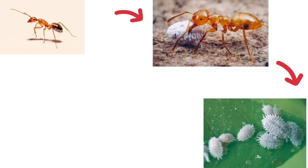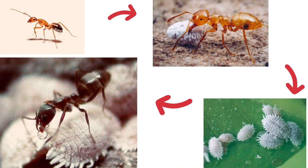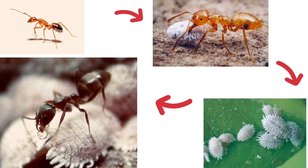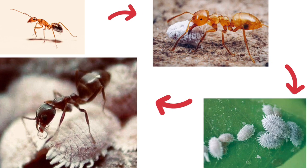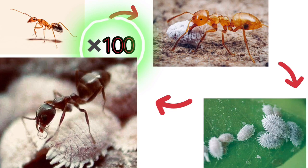You might wonder if the ant is simply being a good friend to the mealy bug, but the ant also has a motive. Whenever the ant is hungry, it goes to the mealy bug, which then secretes a fluid called honeydew. This becomes food for the ant — that's how they work hand in hand. With hundreds of ants doing this in your garden, mealy bugs keep multiplying and spreading from plant to plant.